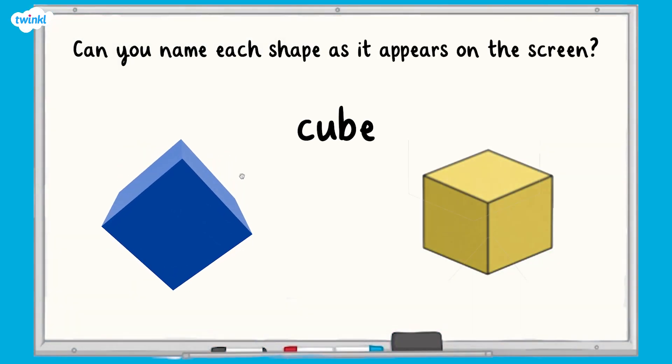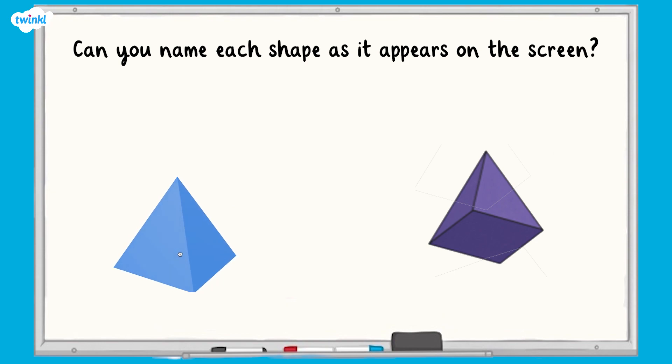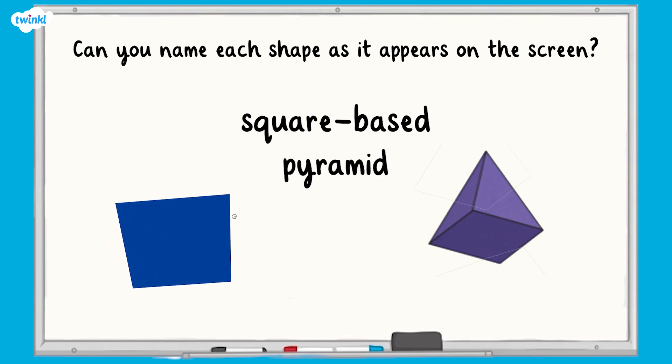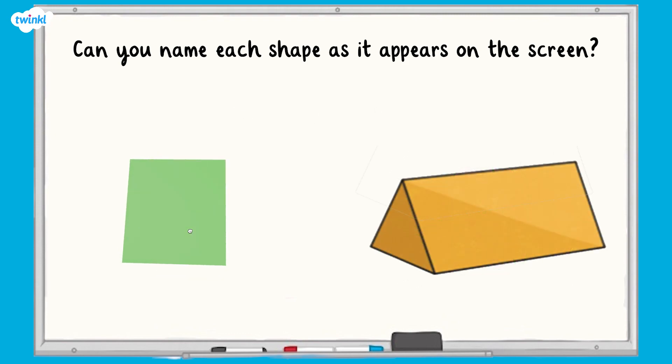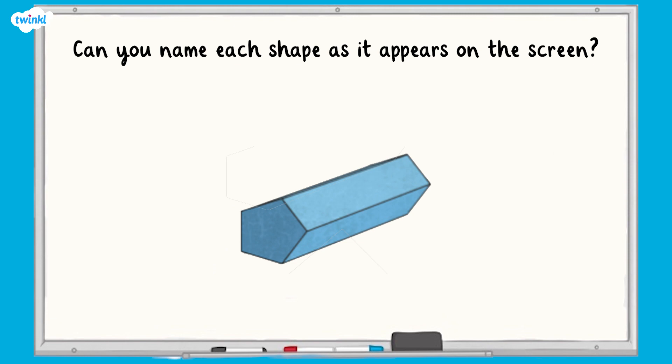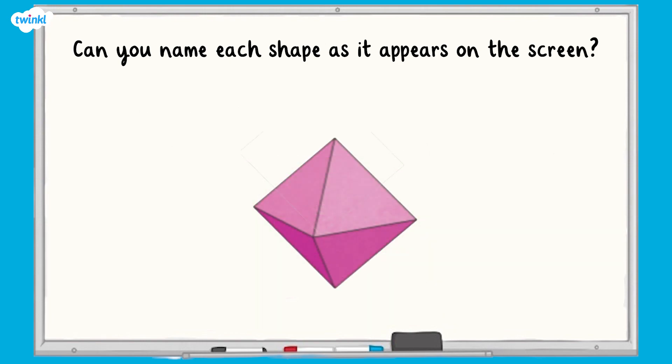It's a cube. A cuboid. A square-based pyramid. A tetrahedron, which sometimes gets called a triangular-based pyramid. A triangular prism. A pentagonal prism. A hexagonal prism. An octagonal prism. And an octahedron.